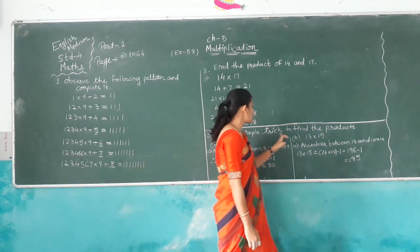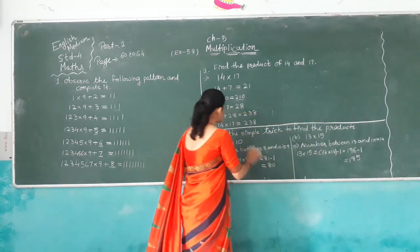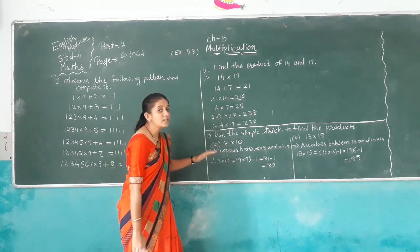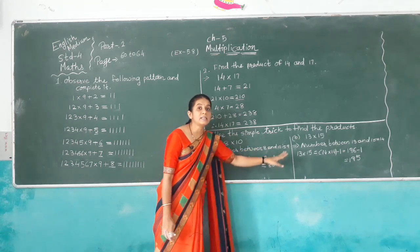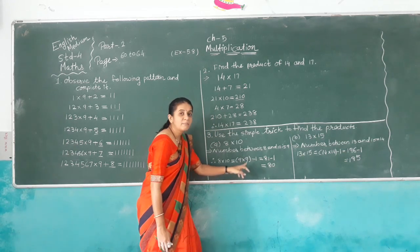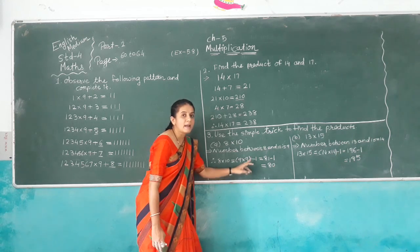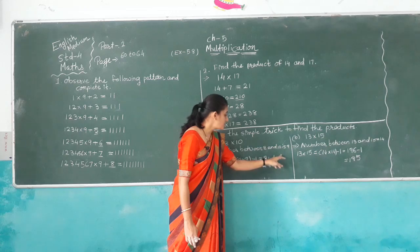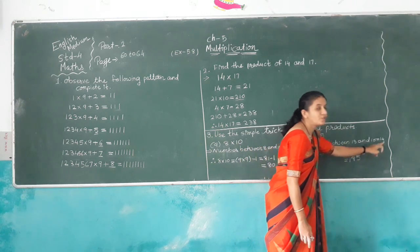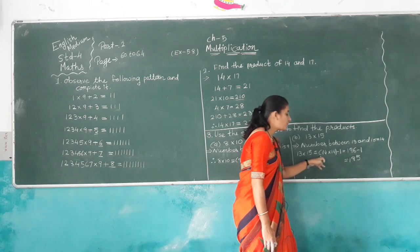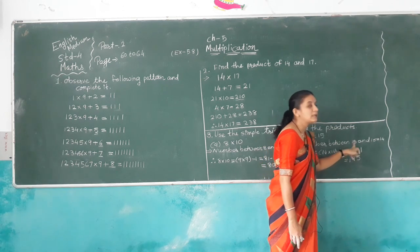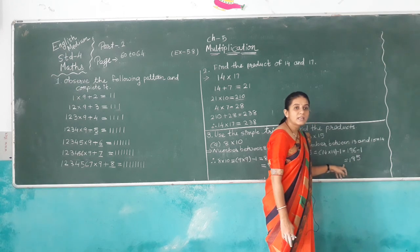Question number 3: Use the simple method to find the products. Here 8 and 10. First we find the number between 8 and 10, which is 9. So 8 multiplied by 10 is equal to 9 multiplied by 9 minus 1. 9 times 9 is 81, minus 1 is 80. Then 13 multiplied by 15: number between 13 and 15 is 14. So 13 multiplied by 15 equals 14 multiplied by 14 minus 1, which is 196 minus 1. So we get answer 195.